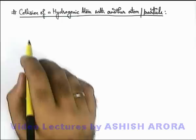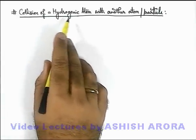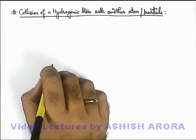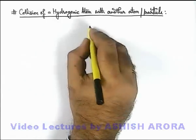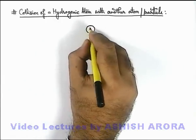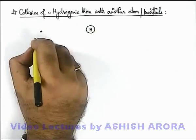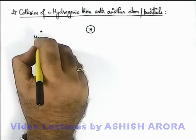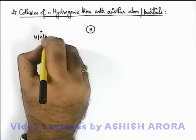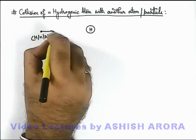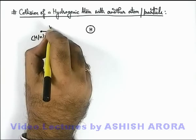Now we'll discuss the analysis of collision of a hydrogenic atom with another atom or particle. Let's consider a situation in which we are given a hydrogen-like atom, on which another atom, which can be a hydrogen-like atom or a neutron or any other particle, is incident onto it with speed v.